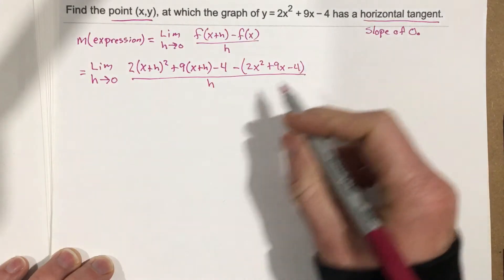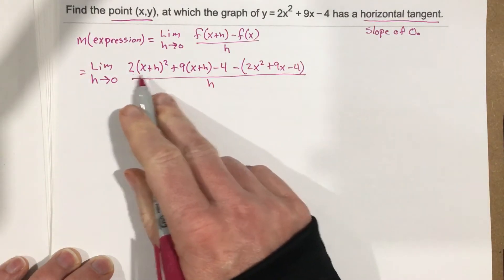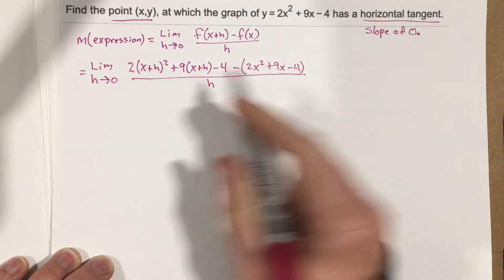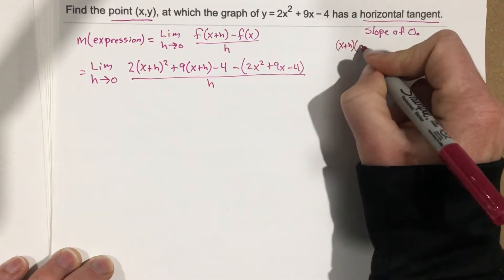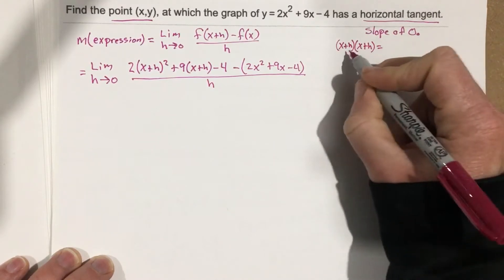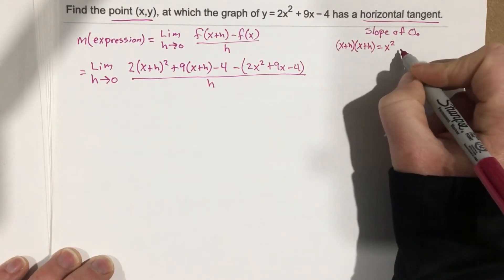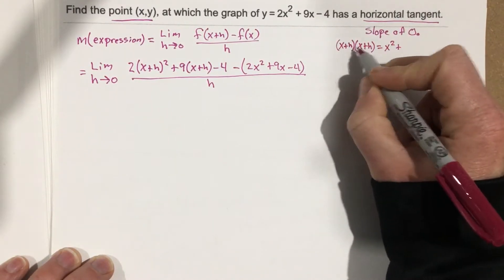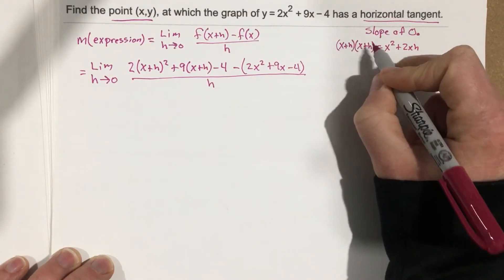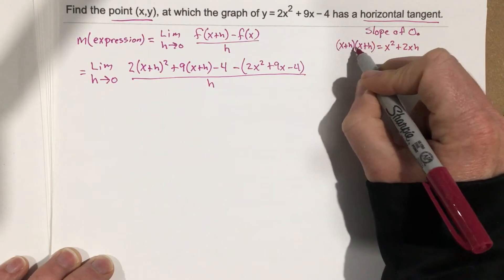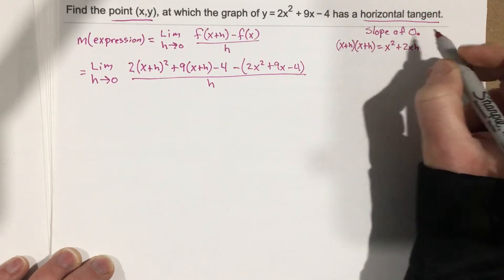We're going to need to distribute these out. But first, before we do that, let's figure out what (x + h)² is. So (x + h)² is (x + h) times (x + h), which will give you x² + 2xh, because we do x times h and then h times x, which gives you 2 of them, and then plus h².